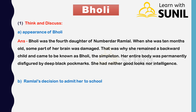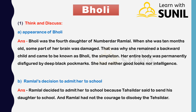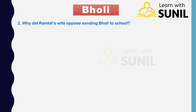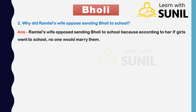B) Ramlal's decision to admit her to school. Answer: Ramlal decided to admit Bholi to school because the Tehsildar said to send his daughter to school, and Ramlal did not have the courage to disobey the Tehsildar. Second: why did Ramlal's wife oppose sending Bholi to school? Answer: Ramlal's wife opposed it because according to her, if girls went to school, no one would marry them.